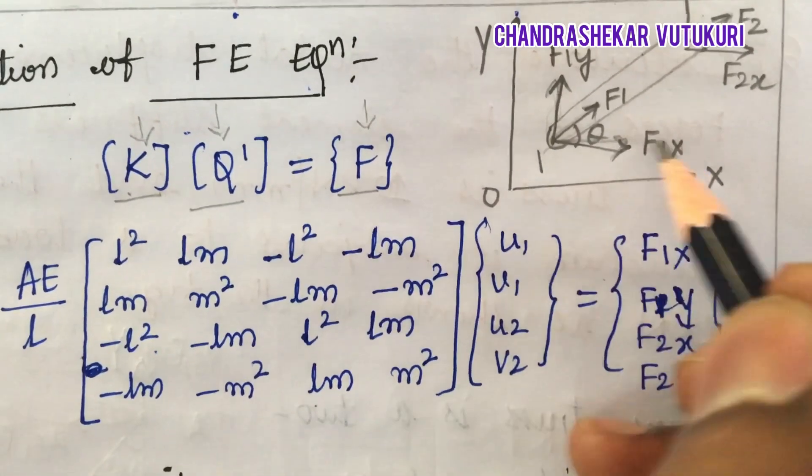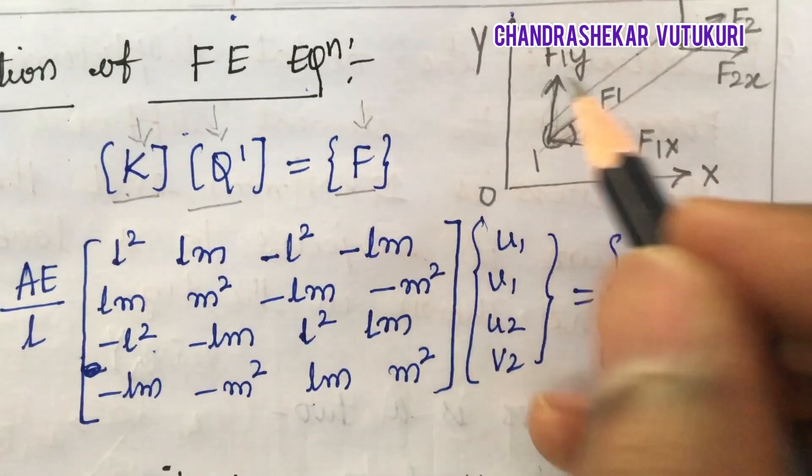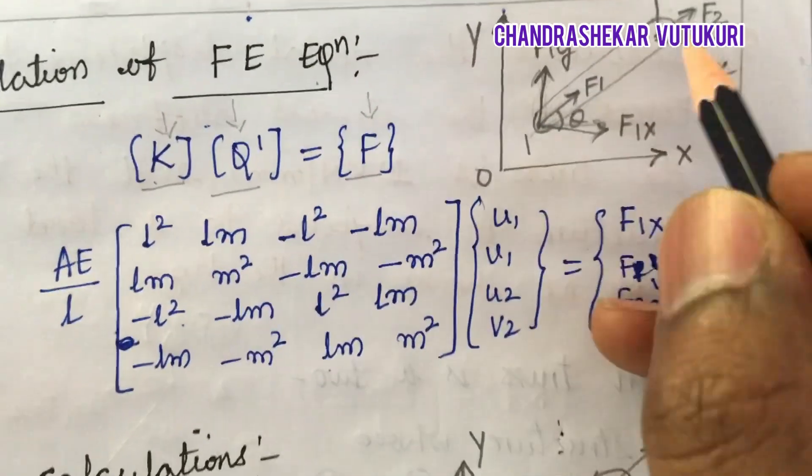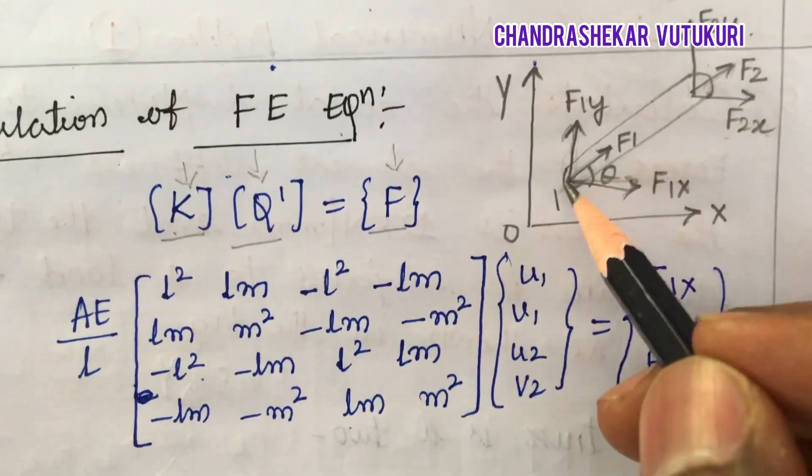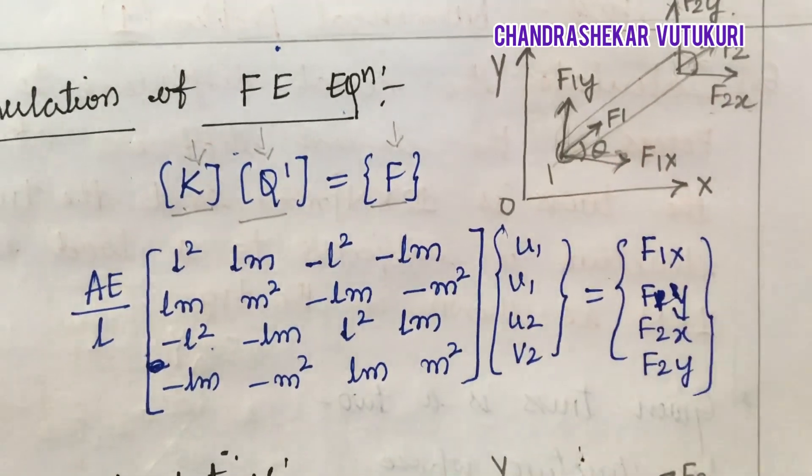So at node 1 along X that is F1X, this is F1Y. At node 2, this is F2X and this is F2Y, and the functions of the forces along the node 1 is F1, F2.